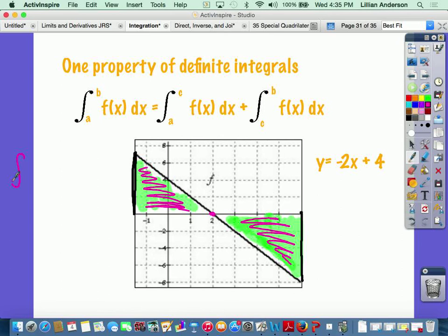You do the integral. A represents the very, very lower bound, which is about negative 2. Then to the point where it actually splits the two regions to 2 of your function, negative 2x plus 4 dx, plus from that split point of 2 all the way up to about 6 of your function again, dx.